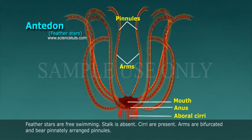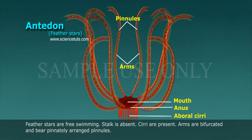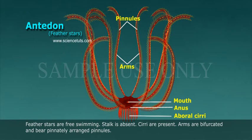Feather stars are free swimming; the stalk is absent but cirri are present. Arms are bifurcated and bear pinnately arranged pinnules.